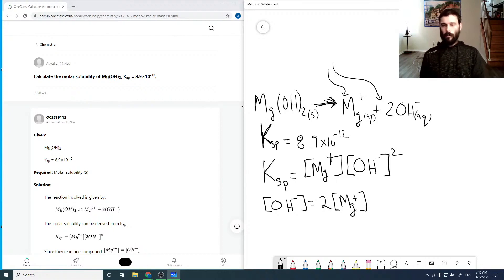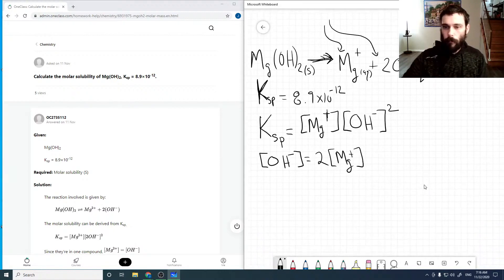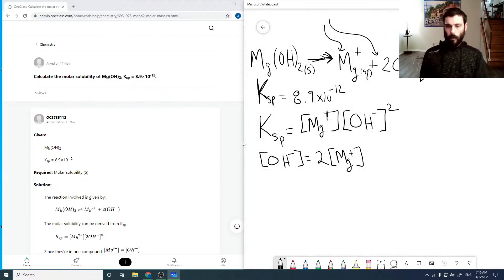And just to make things a little easier, at least just for solving things, with that in, our Ksp is then our magnesium concentration times two times our magnesium concentration squared.